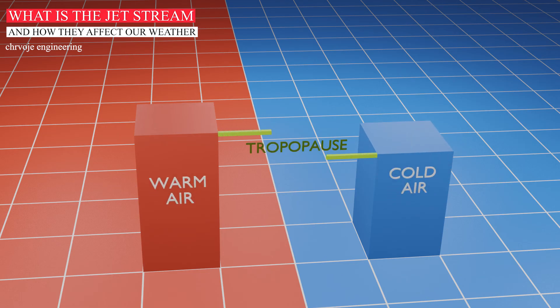A shorter column of cold air has the same surface pressure as a taller column of warm air. This is because in the cold air column, the air is more dense. This causes atmospheric pressure to decrease more quickly with height.